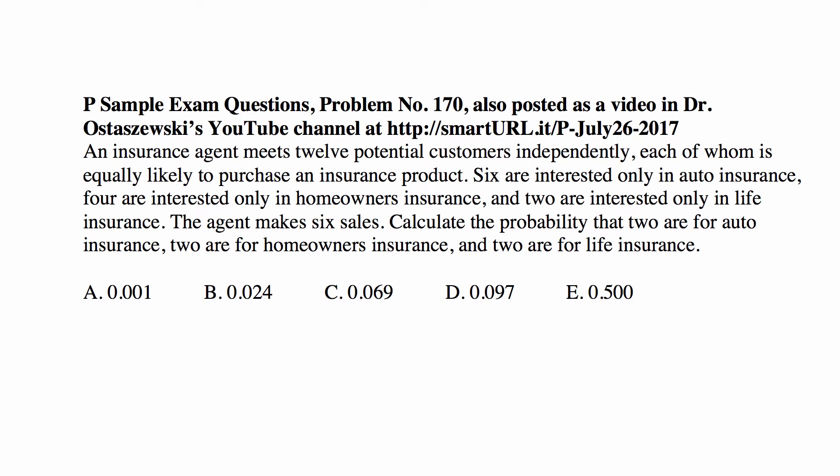An insurance agent meets twelve potential customers independently, each of whom is equally likely to purchase an insurance product. Six are interested only in auto insurance, four are interested only in homeowners insurance, and two are interested only in life insurance. The agent makes six sales. Calculate the probability that two are for auto insurance, two are for homeowners insurance, and two are for life insurance.